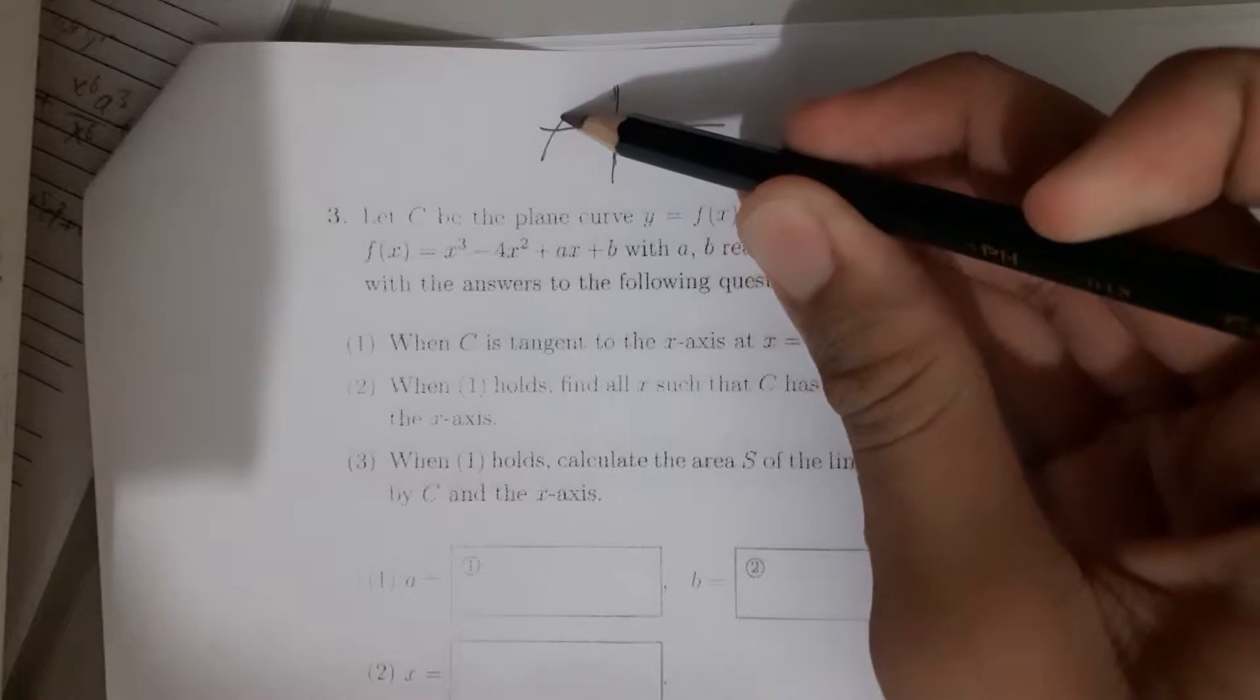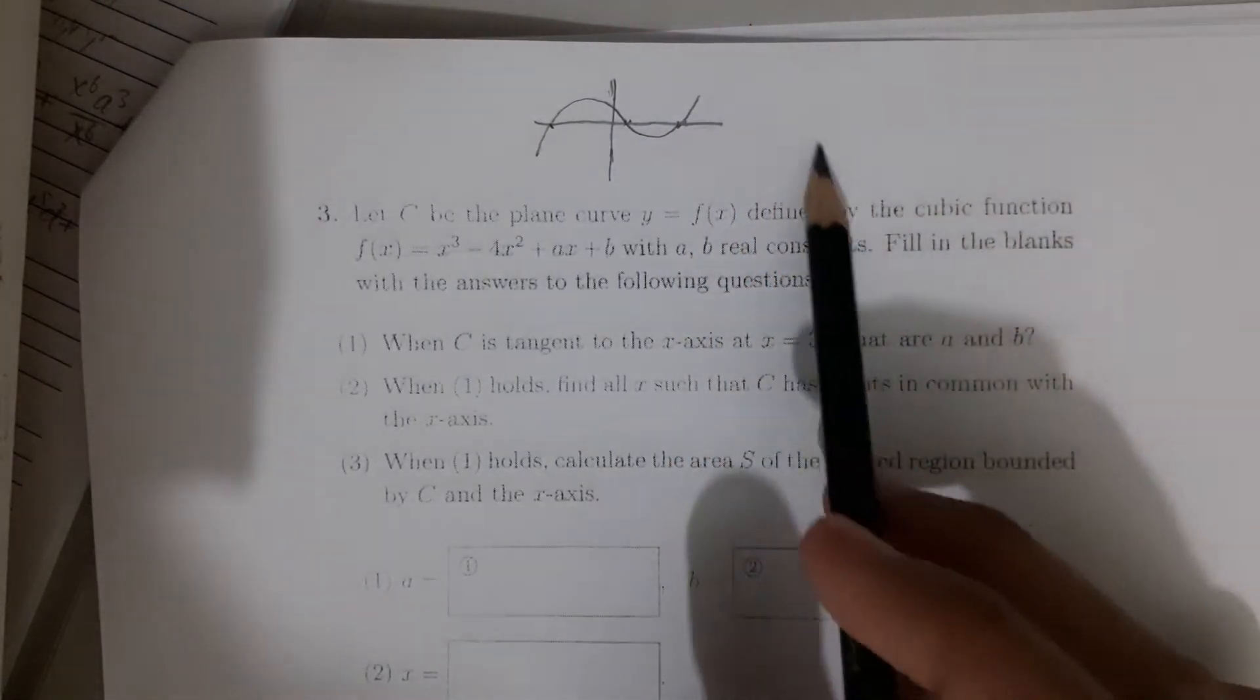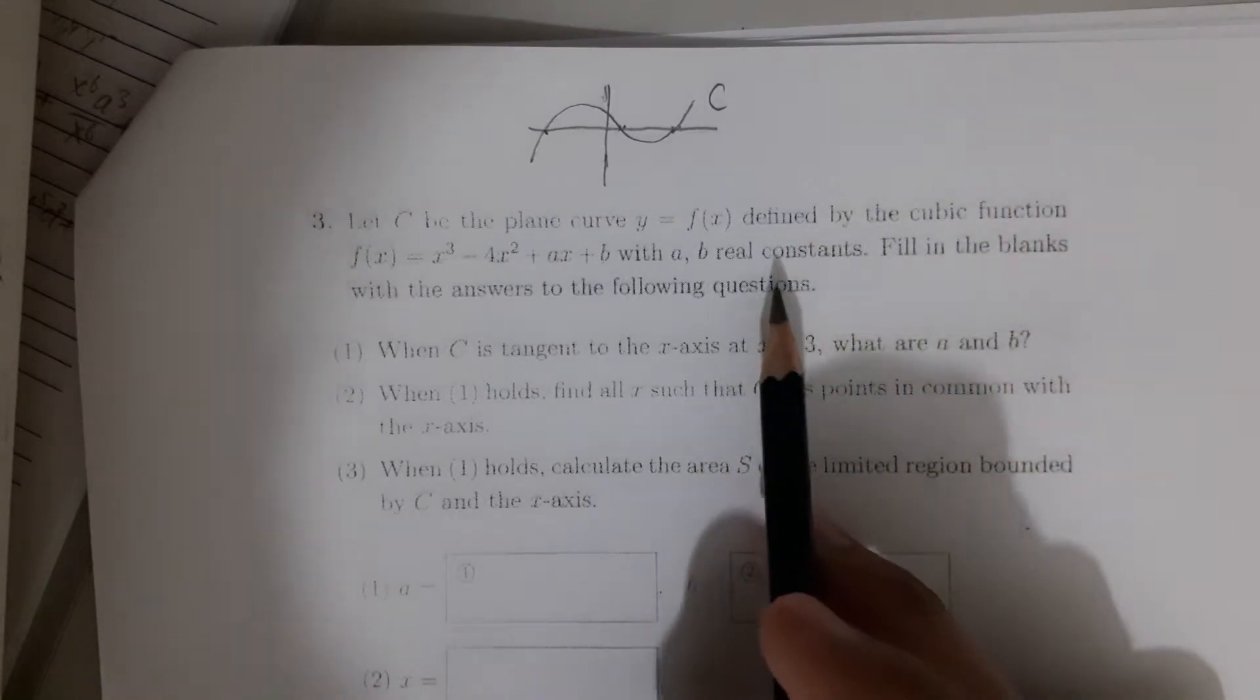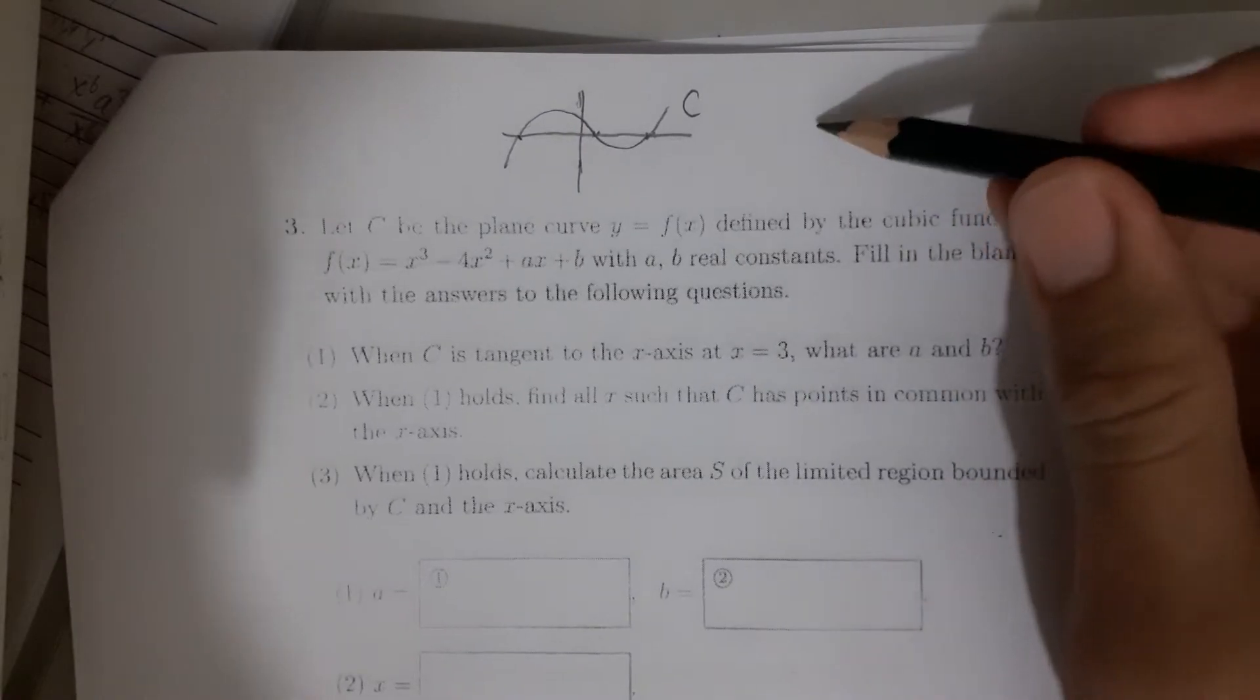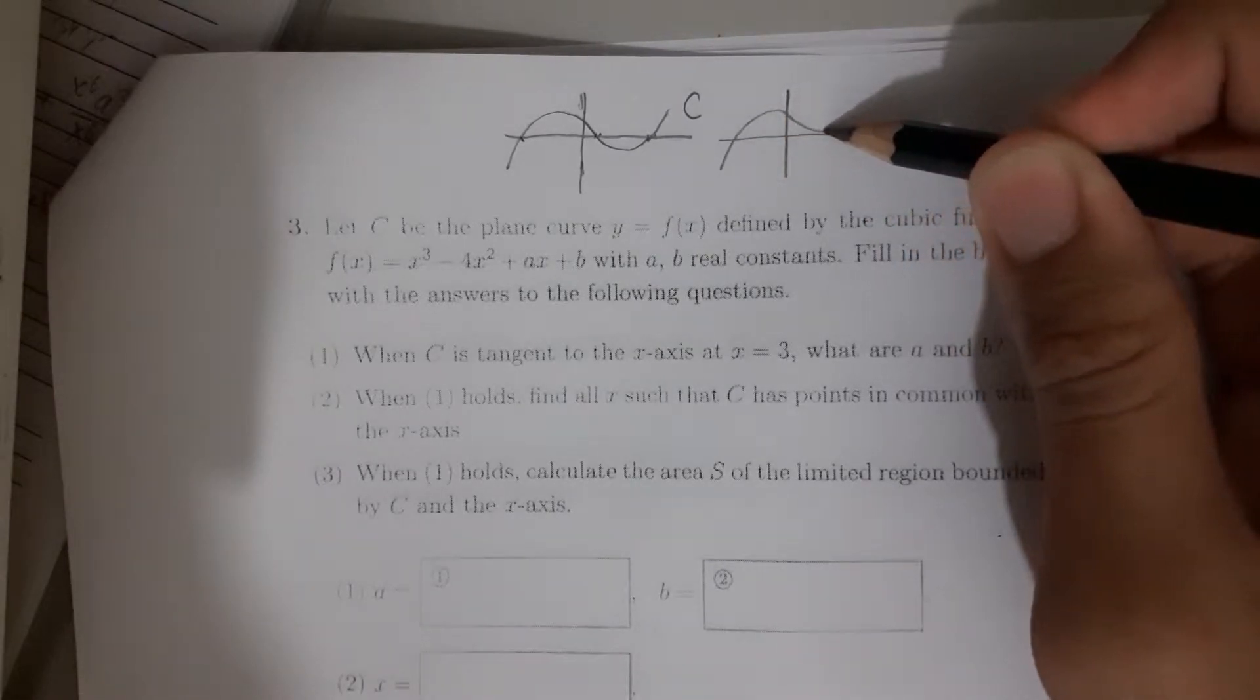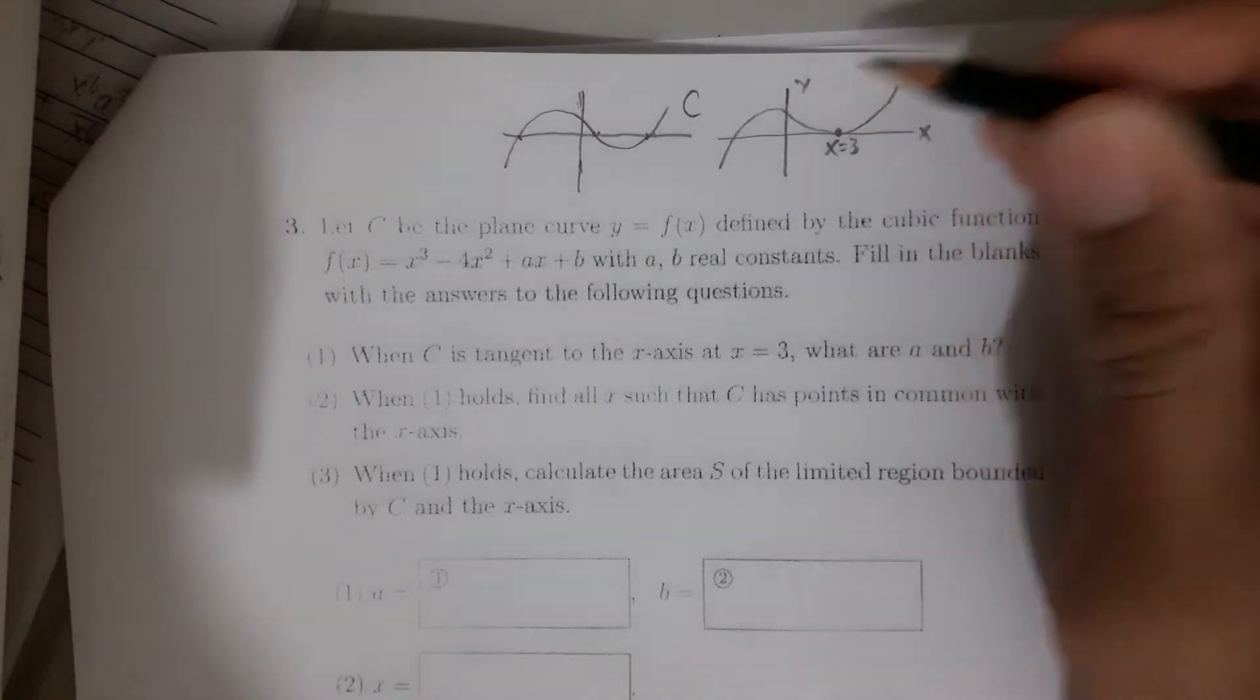A cubic function is where the function has a chance to touch or cross the x-axis 3 times. So it could be laid out this way, with 3 roots there touching the x-axis. Now, when this curve C has the tangent to the x-axis at x equals 3, what it means is this curve, for example, is going this way and happens to be just touching the x-axis, and it touches at x equals 3.